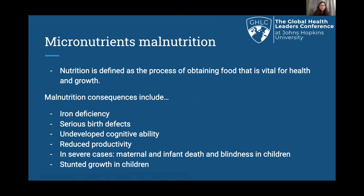Nutrition is defined as the process of obtaining food that is vital for growth. Micronutrients are defined as vitamins and minerals, and they're usually considered the building blocks of health. A lack of these nutrients leads to malnutrition. Consequences include iron deficiency, serious birth defects, stunted growth, and in severe cases, death in mothers and children. Although iron deficiency doesn't seem as serious in countries such as America, if it goes untreated, it could lead to anemia — a deficiency of red blood cells. Severe anemia during pregnancy could lead to low birth weight, poor fetal growth, preterm birth, and a heightened risk of death for the mother and child.